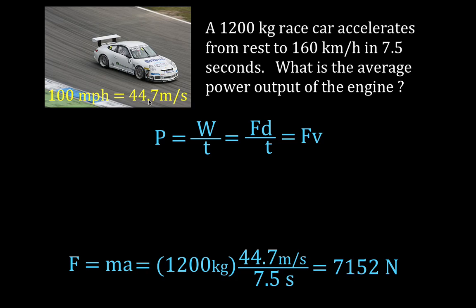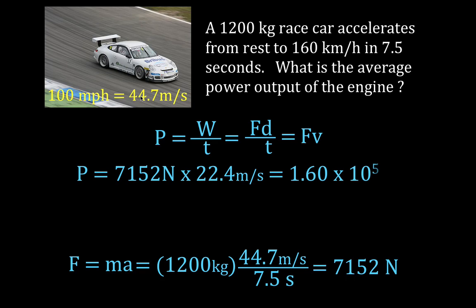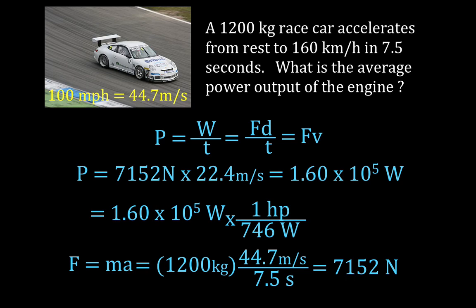We can figure out the average velocity just by taking the final velocity and dividing it by two, giving 22.4 meters per second. Now we can solve for the power: force is 7,152 Newtons times the average velocity of 22.4, and we get a power output of 1.6 times 10 to the 5 watts. Converting to horsepower — one horsepower equals 746 watts — so 1.6×10⁵ divided by 746 gives an average power output of 214 horsepower. That is way number one.